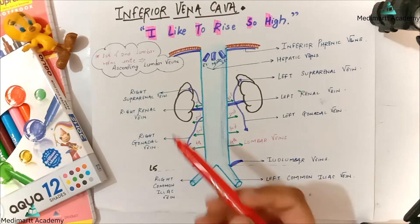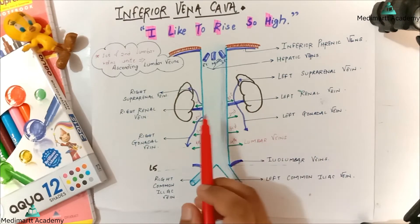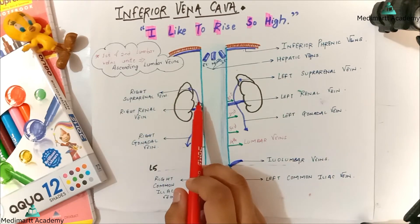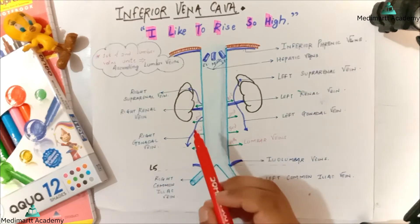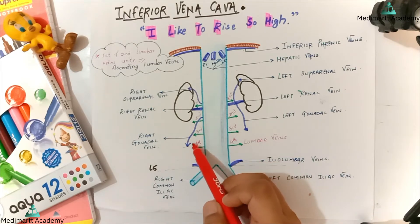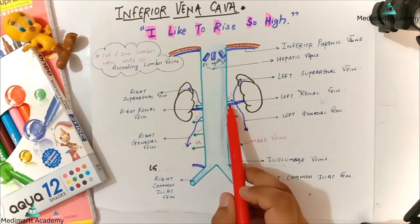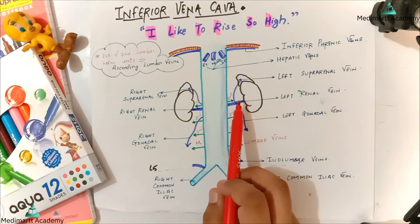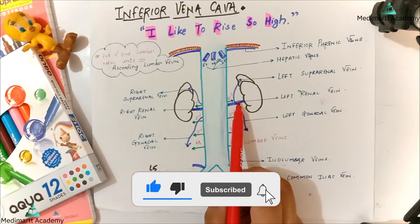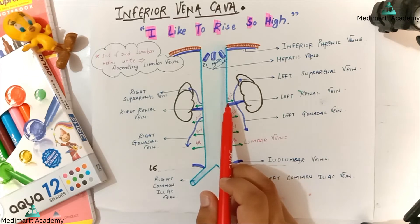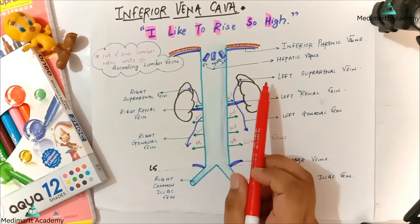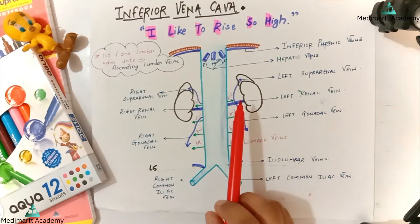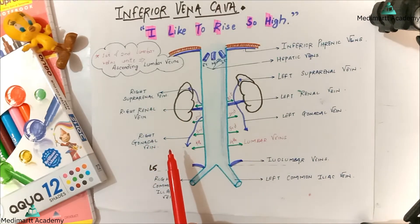Now I'll explain why I only mentioned the right suprarenal and right gonadal veins. As you can see in the diagram, the right suprarenal vein and right gonadal vein are direct tributaries of the inferior vena cava. However, on the left side, the left suprarenal vein and left gonadal vein are tributaries of the left renal vein, and the left renal vein is then the direct tributary of the inferior vena cava. So the left suprarenal and left gonadal veins drain indirectly into the inferior vena cava through the left renal vein, while the right suprarenal and right gonadal veins drain directly into the inferior vena cava.